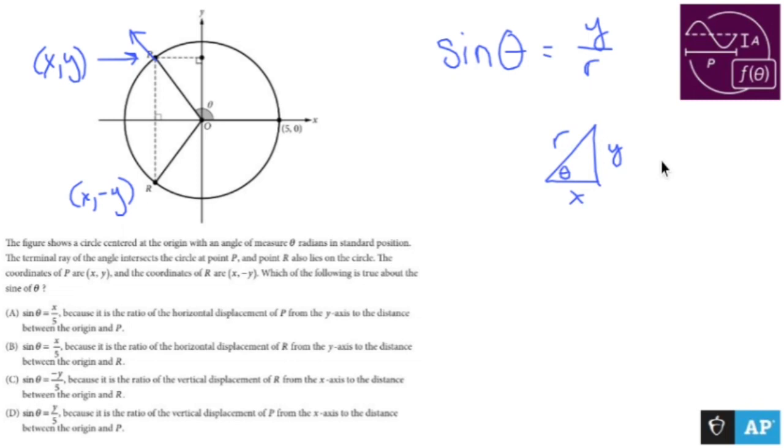And sine comes from SOHCAHTOA, opposite over hypotenuse. So that's where sine theta equals y over r.